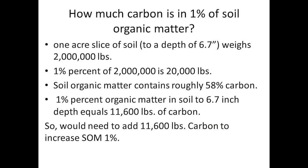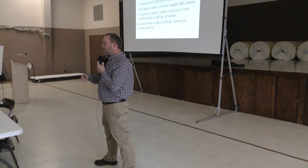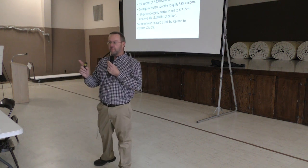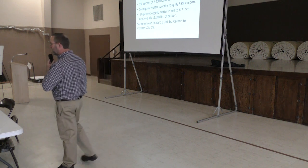So how much carbon does it take to increase your soil organic matter by 1%? One acre slice of soil at a depth of 6.7 inches weighs about 2 million pounds. One percent of that is 20,000 pounds. Soil organic matter contains roughly 58% carbon, so 1% organic matter in soil at 6.7 inches equals 11,600 pounds of carbon. We'd need about 11,600 pounds of carbon to increase our soil organic matter 1%.